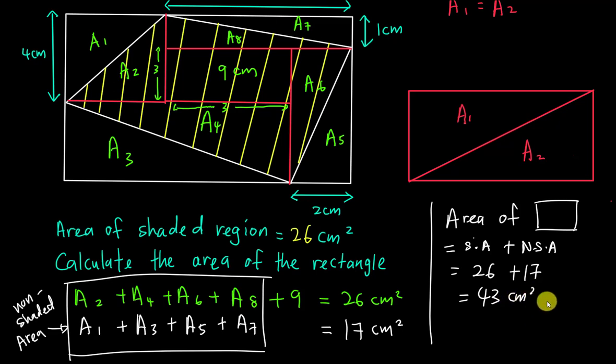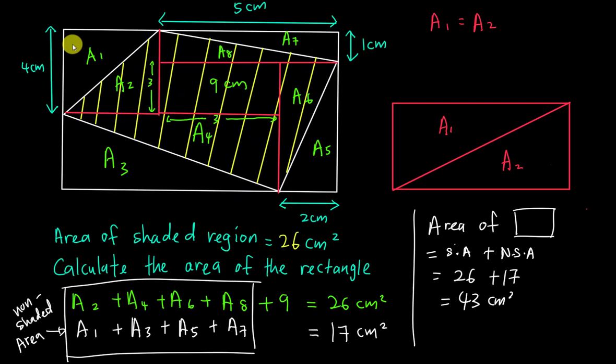This is how I get the area of the rectangle. Basically, I just add all the non-shaded area with the shaded area together, and I get the area of the rectangle. This method is much easier than using algebra with x and y to solve this kind of question. I'm not sure if you find this method useful, but I hope at least you learned something from my video. See you guys in the next video. Bye-bye.